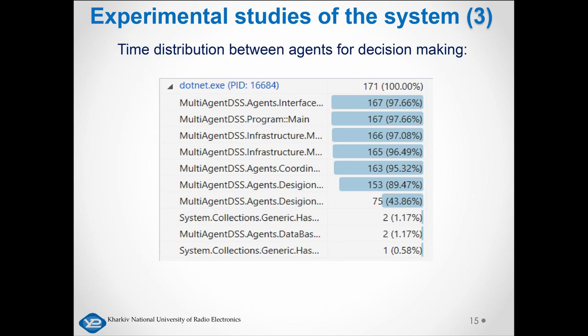Four possible solutions to the problem were provided for decision-makers, including a precedent with complete similarity. Based on the obtained data, it can be concluded that although there is a precedent similar to the initial one with heart disease, the CDSS determined that the chance of diagnosing the disease in a person with these indicators is low.